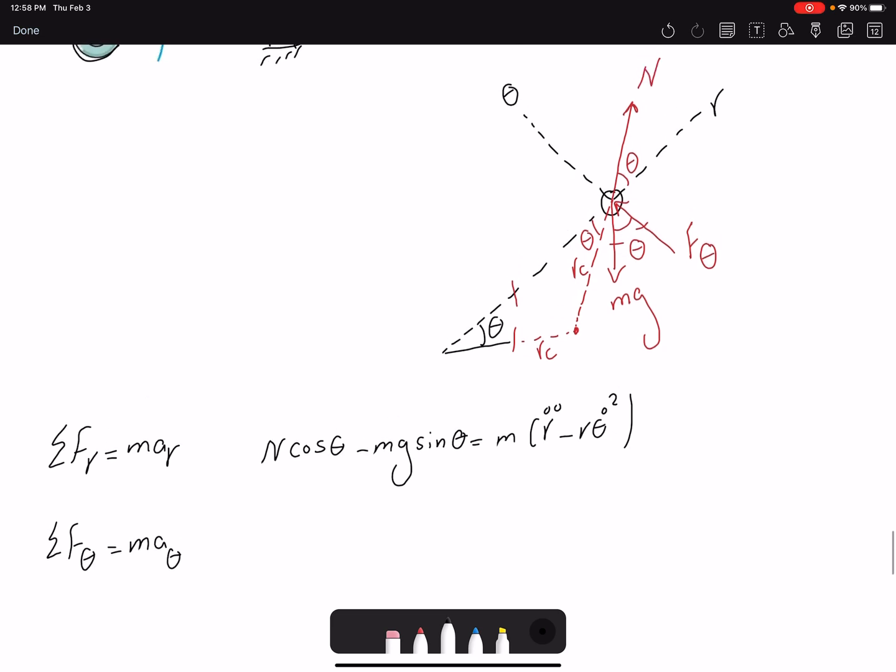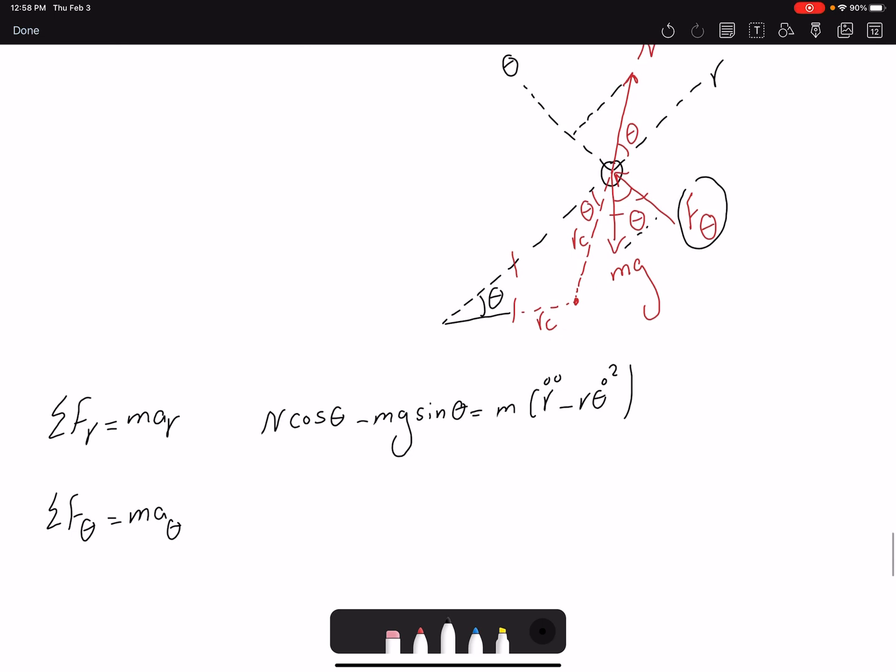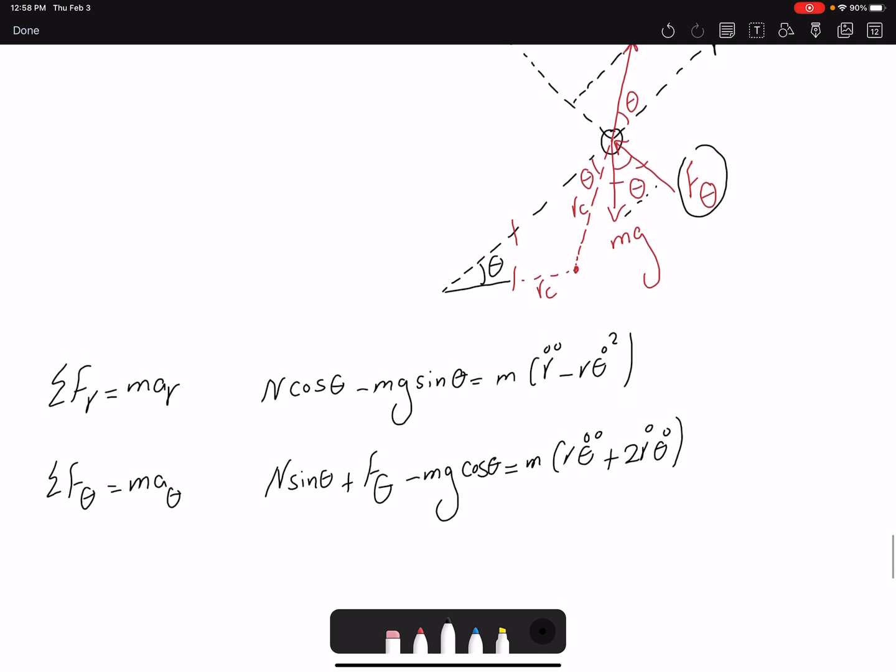If you look at the problem, we see that we have F theta. We have MG cosine. It would have a component. And then also N sine would have a component. So N sine theta plus F theta minus MG cosine theta equals M R theta double dot plus 2R dot theta dot.